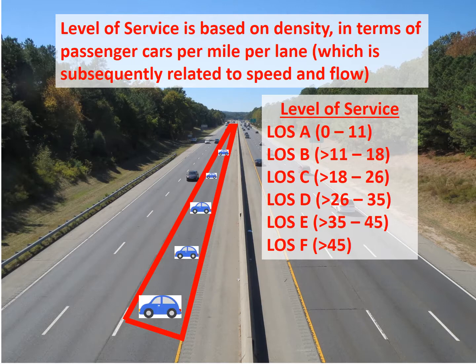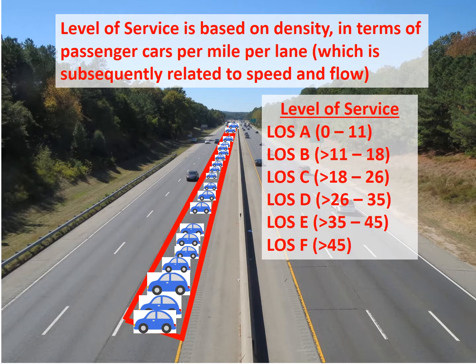We can add vehicles to this one-mile section of freeway and still be in level of service A, and continue adding more to move into level of service B, increasing density further into level of service C, approaching level of service D, and continuing until we reach the unstable or forced flow conditions of level of service E and F.